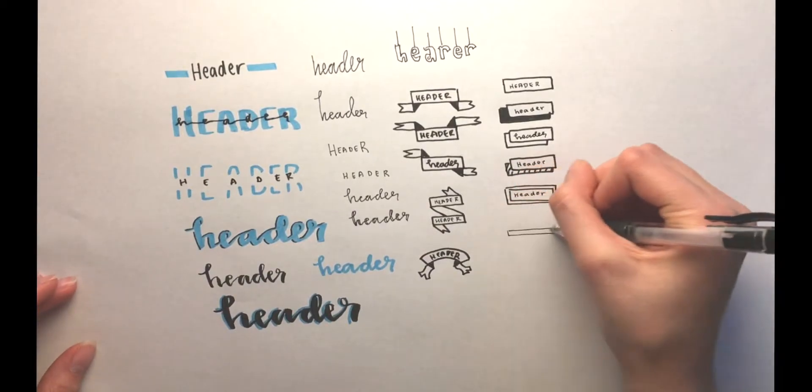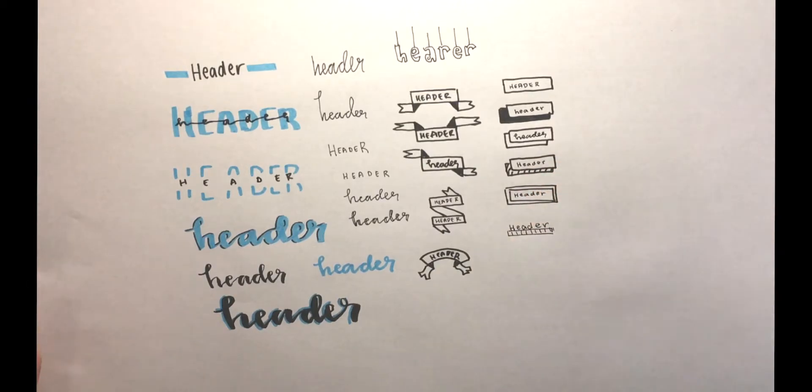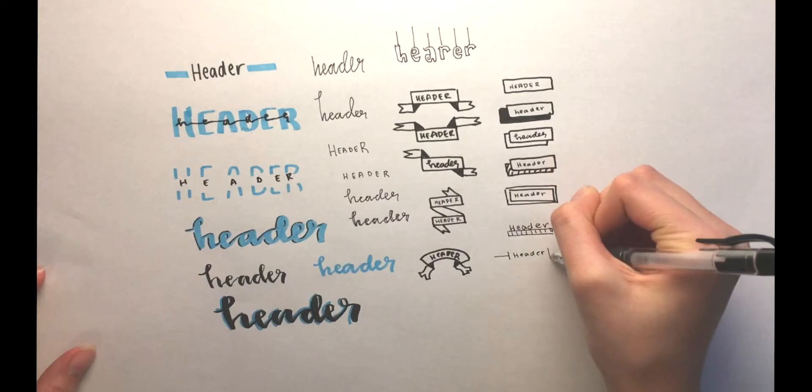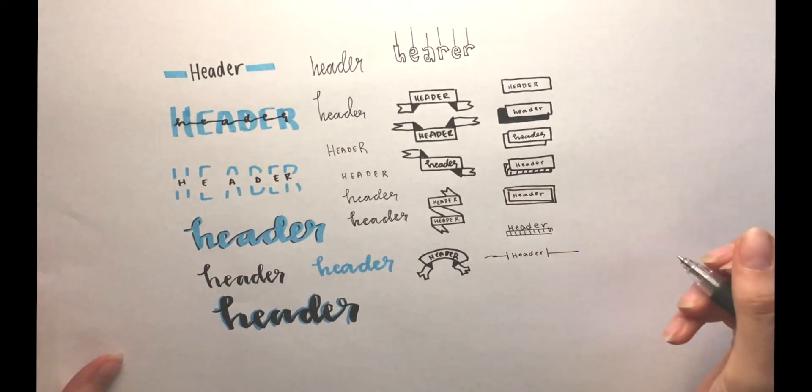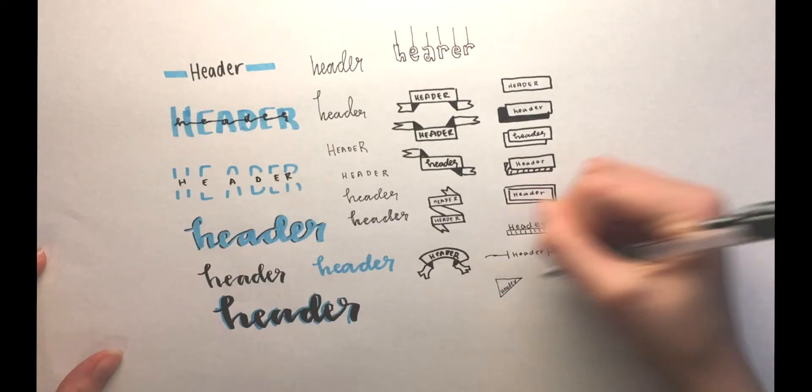These next ones you could use in your notes. So this one just has a basic bar underneath it. This next one is a header inside of these lines. You can also add color to these. Then I tried this triangle, like a tab almost.